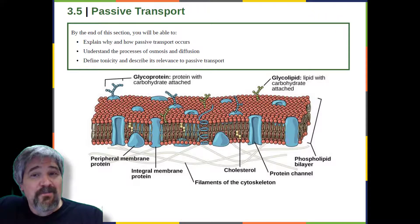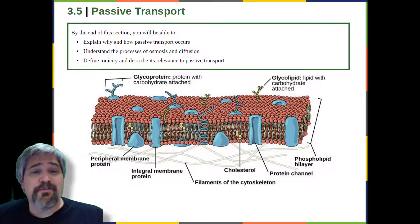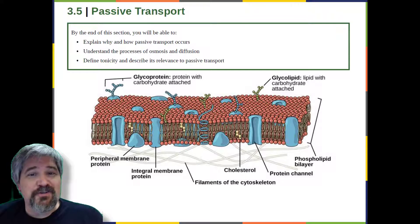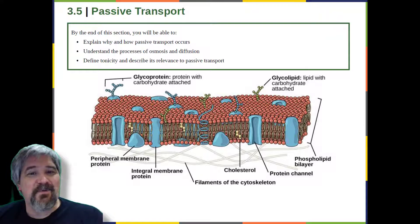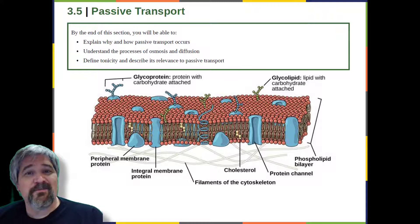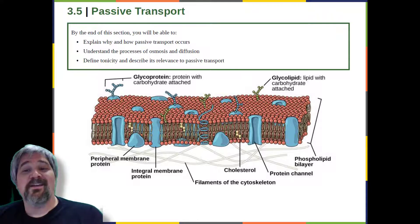Remembering that an oxygen molecule is composed of two oxygen atoms that are double bound to each other. Polar substances, with the exception of water, present problems for the membrane. While some polar molecules connect easily with the outside of a cell, they cannot readily pass through the lipid core of the plasma membrane. Additionally, whereas small ions could easily slip through the spaces in the mosaic of the membrane, their charge prevents them from doing so.